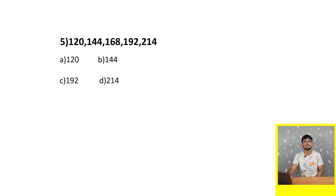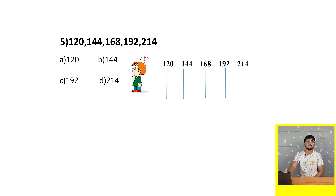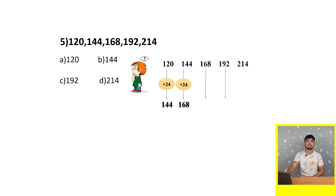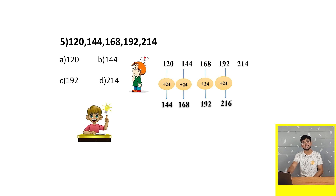Let's consider the fifth question: 120, 144, 168, 192 and 214. Adding 24 each time: 120+24=144, 144+24=168, 168+24=192, 192+24=216. But the last number in the series is 214, not 216, which is wrong. Therefore the wrong number is 214 — that is option D.